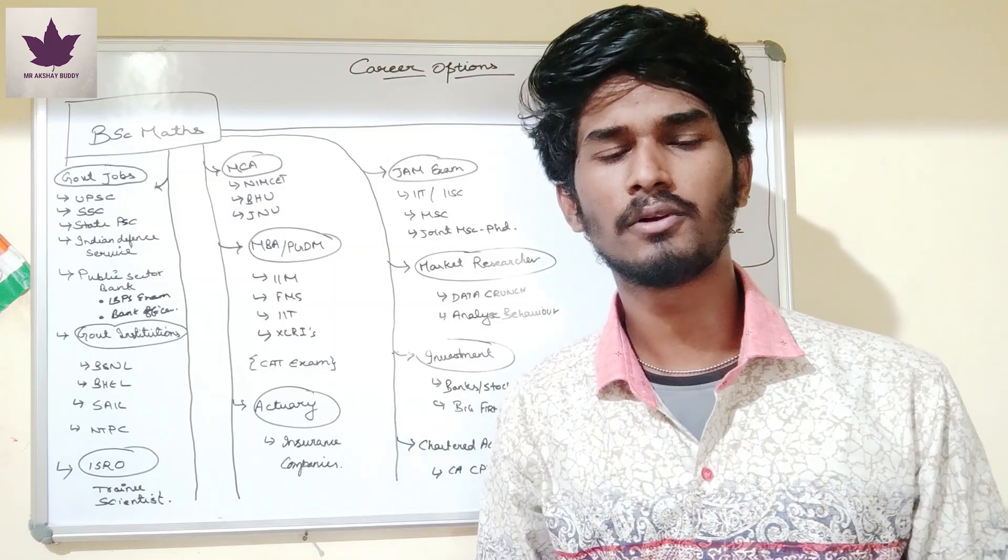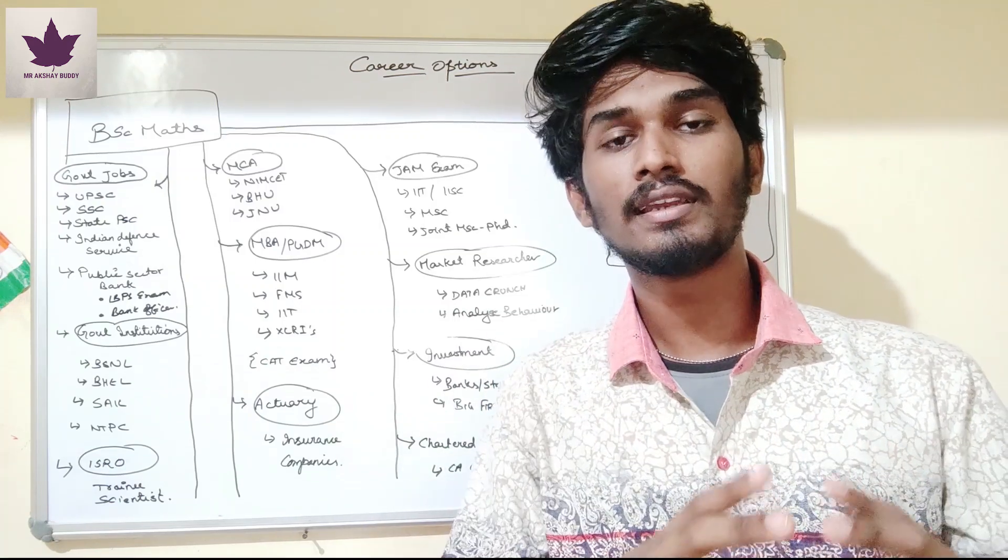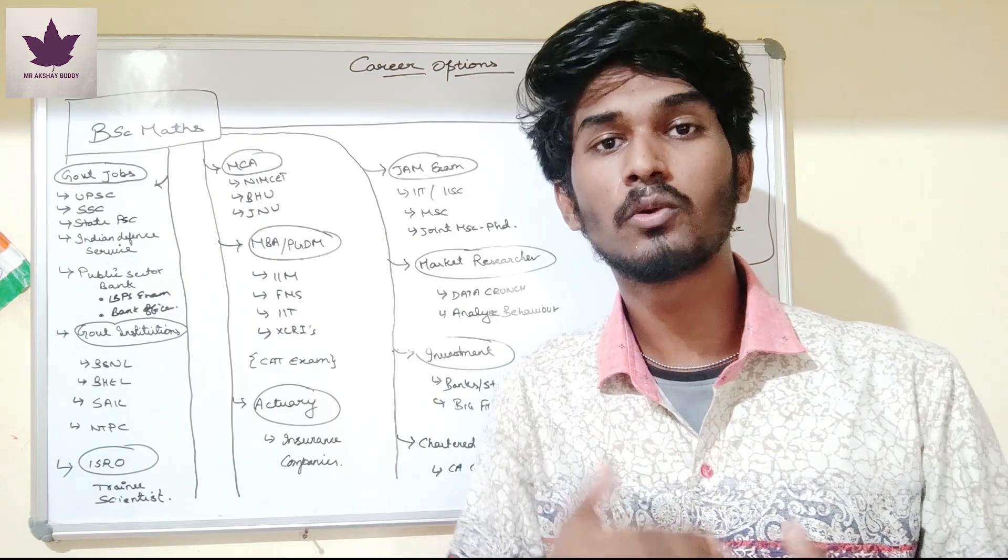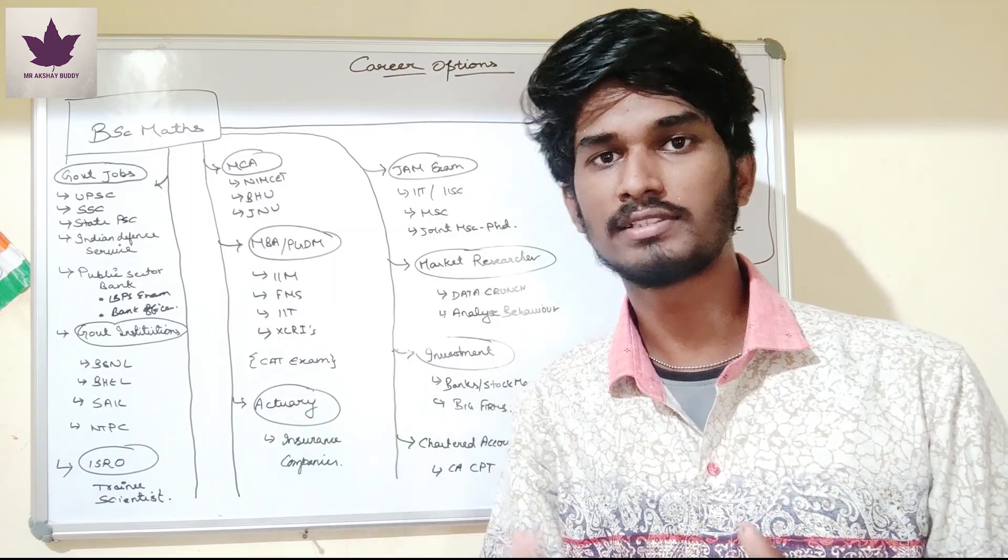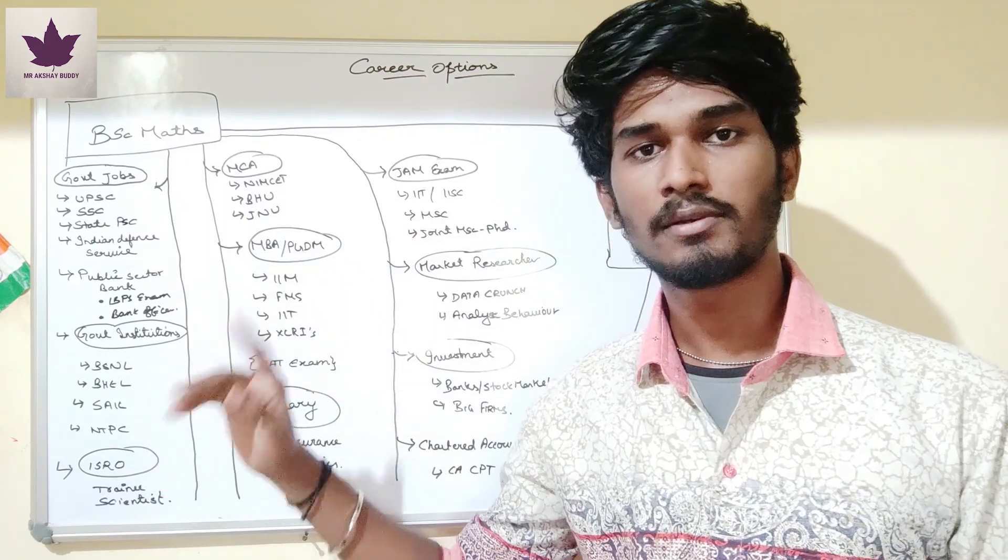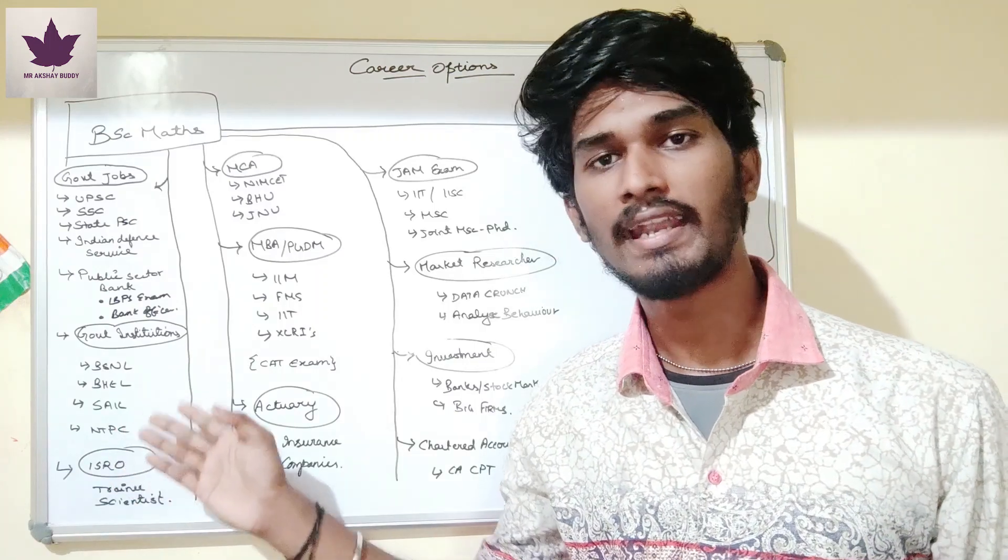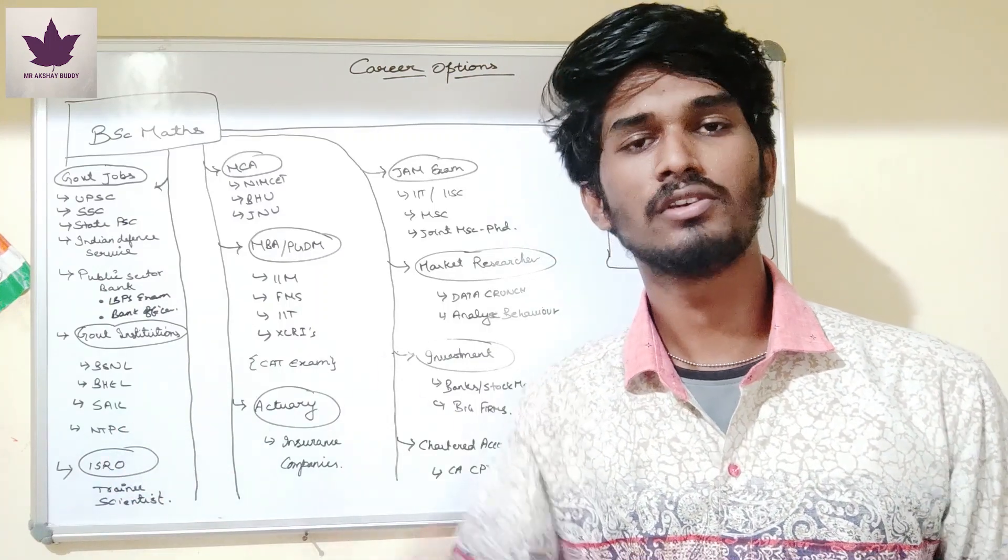Now what are government institutions? Government institutions are public organizations where the government share is 51% or more. For example BSNL, Bharat Heavy Electrical Limited (BHEL), SAIL, NTPC - National Thermal Power Corporation.